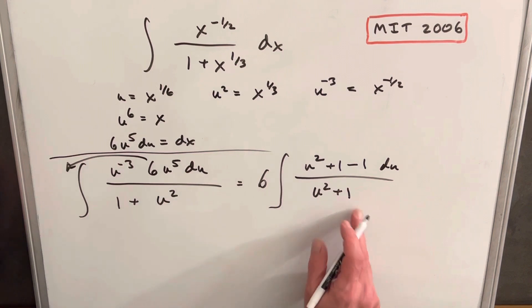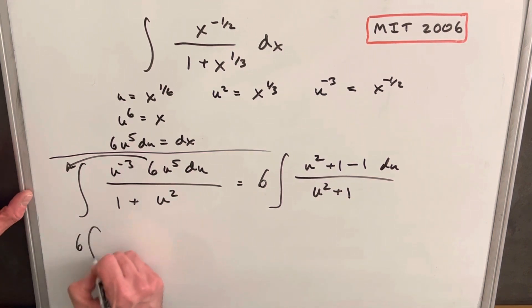This will allow us to break this into two integrals, so we're going to have the integral of 6, this being 1, so we'll have 1 du minus a 1 over u squared plus 1. We'll just distribute our 6 du, and now it looks like we have two easy integrals that we know how to deal with.